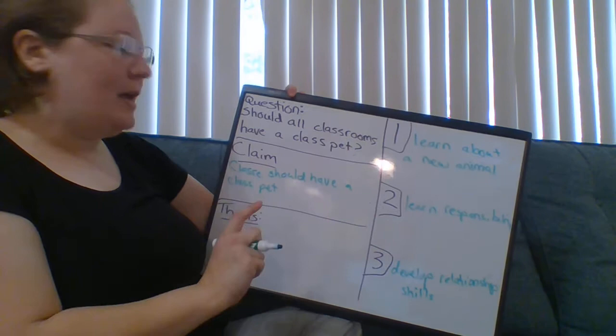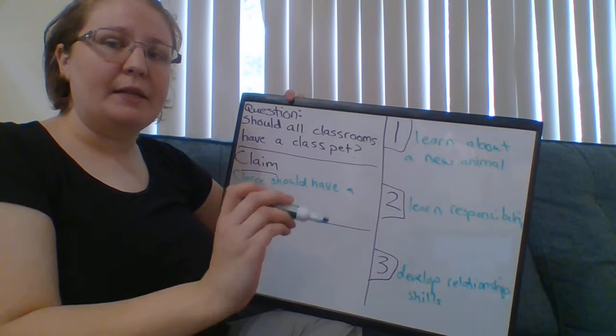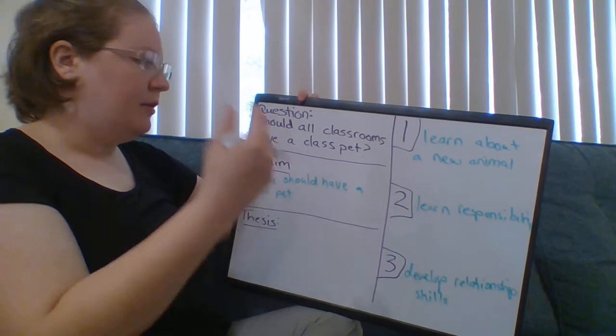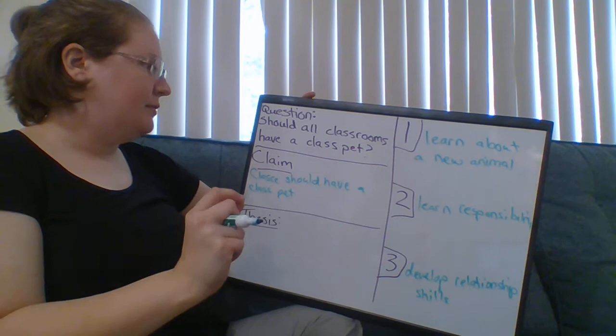So we don't have a thesis statement yet, but we have everything that we need to make a thesis statement. Remember, what we need to make a thesis statement is we need a claim and your reasons why. So how do you think we're going to put a thesis statement together?